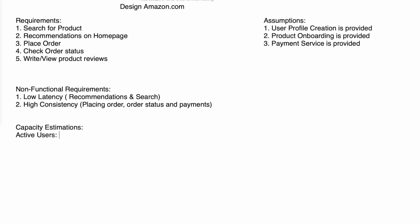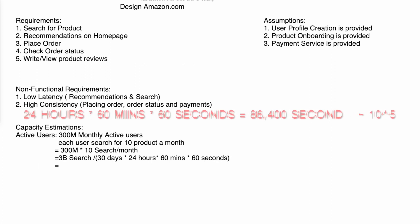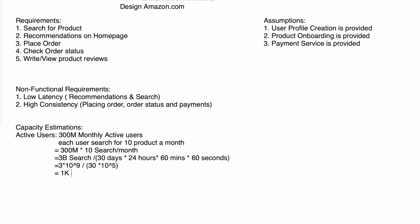For capacity estimation: Amazon has about 300 million monthly active users, each searching 10 products a month, giving 3 billion searches per month. Converting to searches per second: 3 billion divided by 30 days, divided by 86,400 seconds per day — we round that to 10^5 for easier calculation — gives us 3×10^9 divided by 30×10^5, which equals approximately 1,000 searches per second. Our system should be capable of handling 1,000 searches every second.